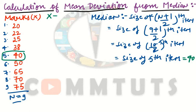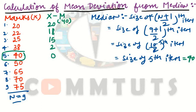Now calculate the deviations from median: x minus median (m = 40). So: 20 − 40 = 20, 22 − 40 = 18, 25 − 40 = 15, 38 − 40 = 2 (taking absolute value), 40 − 40 = 0, 50 − 40 = 10, 65 − 40 = 25, 70 − 40 = 30, 75 − 40 = 35.